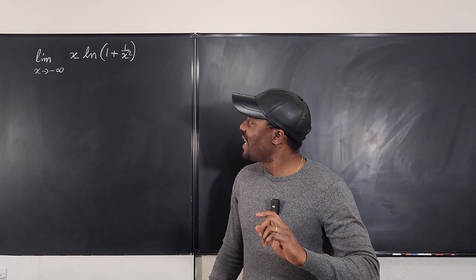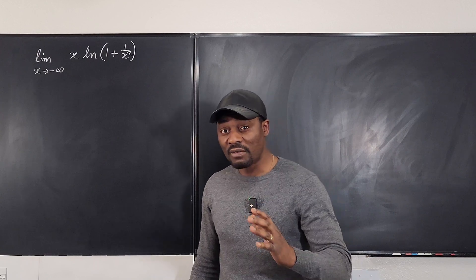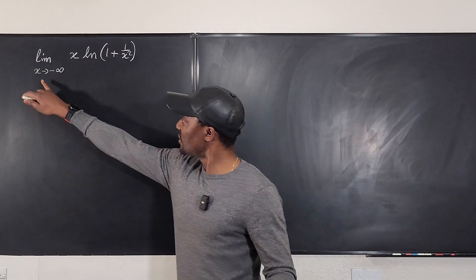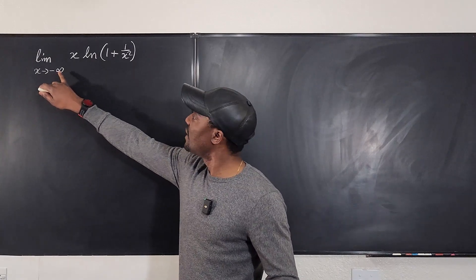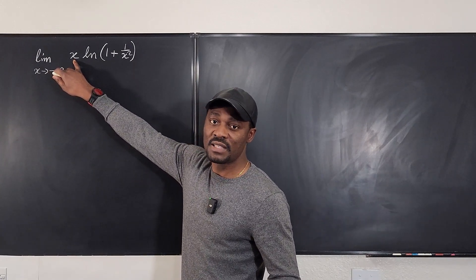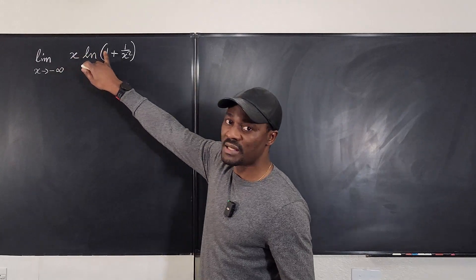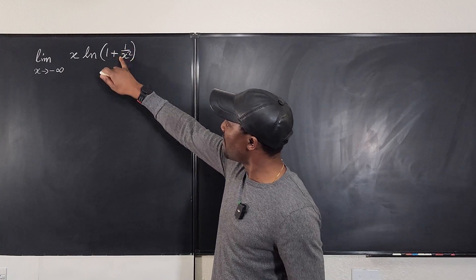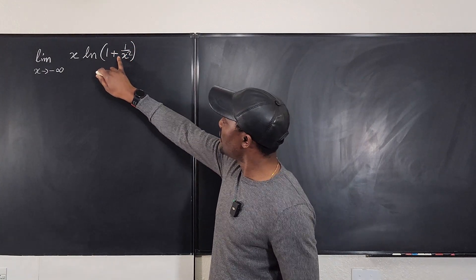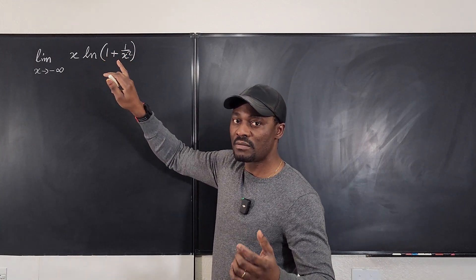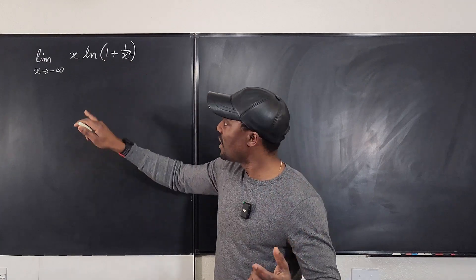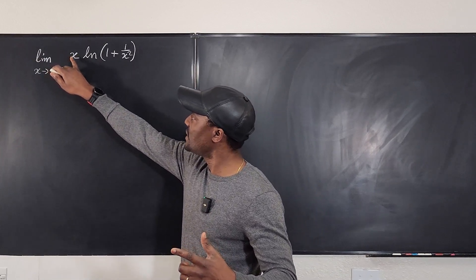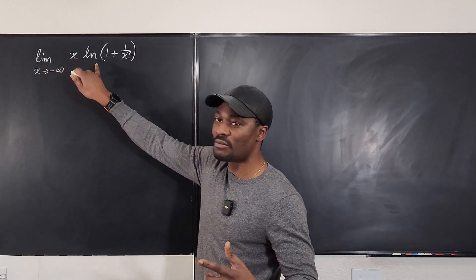Remember that the first thing you want to do when you have a limit problem is to just observe what happens. As x goes to negative infinity, this goes to negative infinity, but you're multiplying it by something. You notice that this is going to go to zero. Zero plus one is going to give you one. The natural log of one is zero. So we're going to end up with negative infinity times zero.